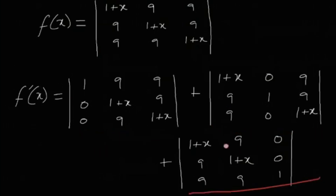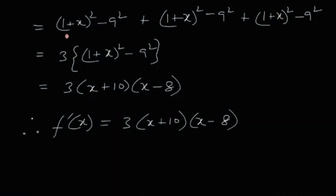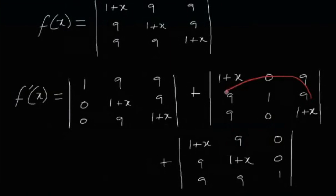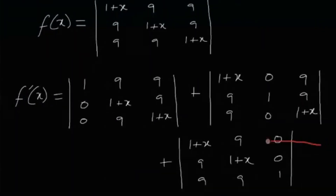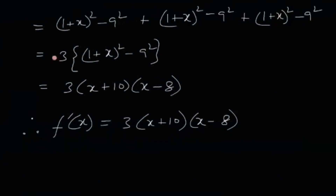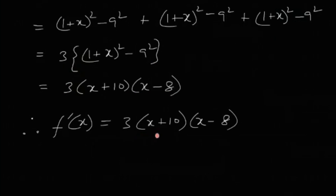Calculating each of the three determinants is straightforward. Expanding the first along its first column gives (1+x)² − 9². Expanding the second along its second column (which has many zeros) also gives (1+x)² − 9². Expanding the third along its third column again gives (1+x)² − 9². So f'(x) = 3[(1+x)² − 81] = 3(x+10)(x−8).